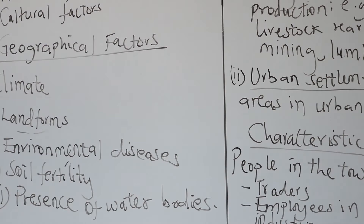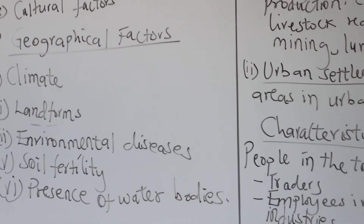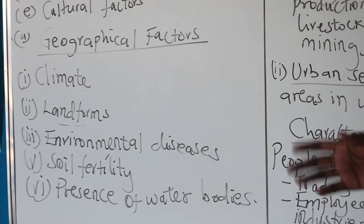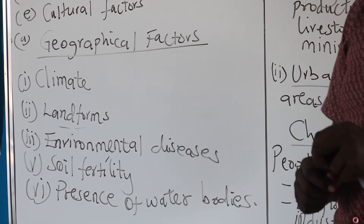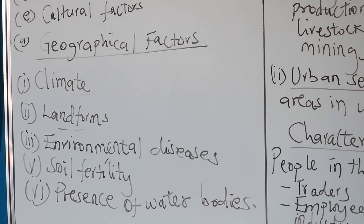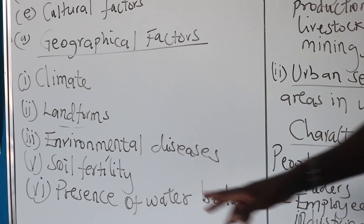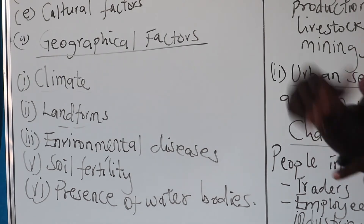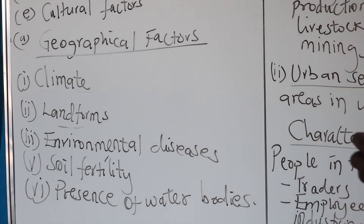Environmental diseases: areas which are infested with tropical diseases such as malaria and sleeping sickness will always drive people away, as they wouldn't wish to live in areas where they are going to suffer. Whereas areas which are free from these environmental diseases will always encourage people to live there because their health is guaranteed.